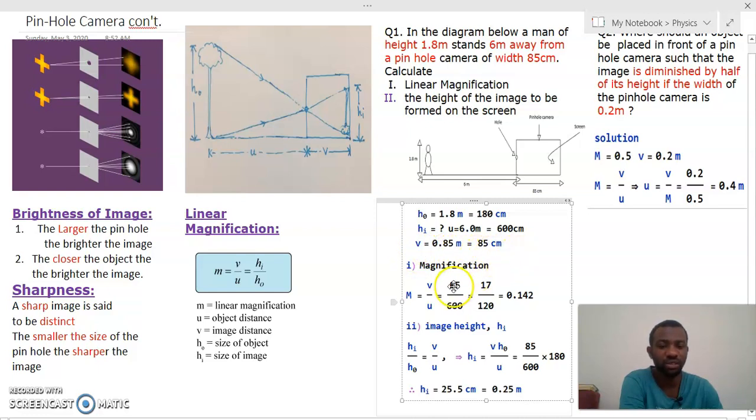Now we calculate our magnification. This magnification equals v/u, which is 85 divided by 600. If you do the computation, you end up with 17/120, which in decimals is 0.143 to three decimal places.